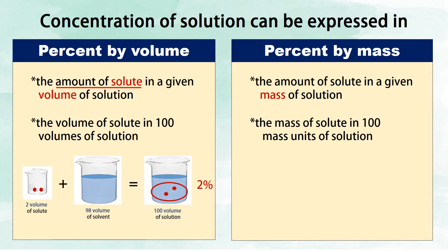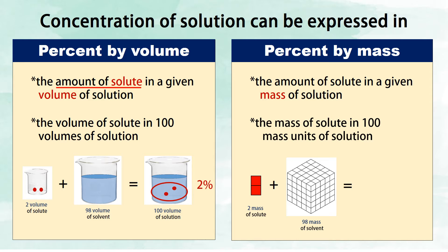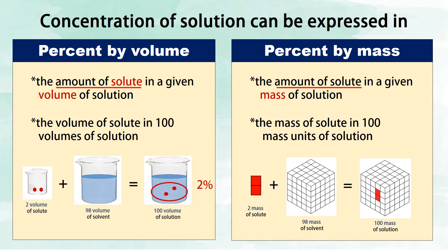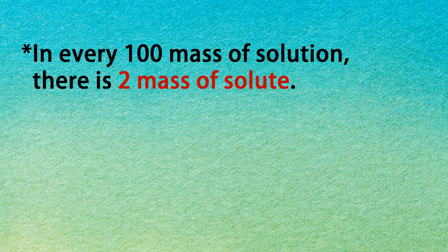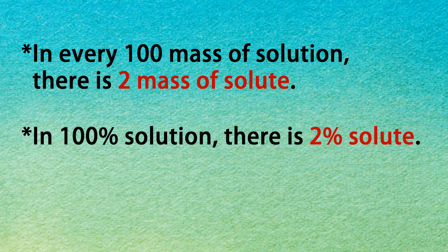Percent by mass is the mass of solute in 100 mass units of solution. For example, 2 mass units of solute plus 98 mass units of solvent equals 100 mass units of solution. The amount of solute is 2 mass units, so the concentration of solution is 2%. In every 100 mass units of solution, there are 2 mass units of solute.